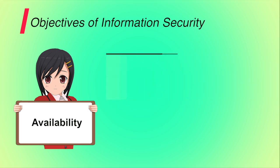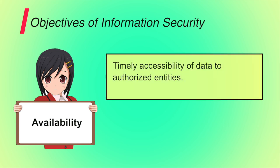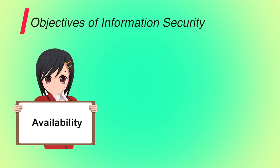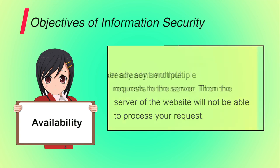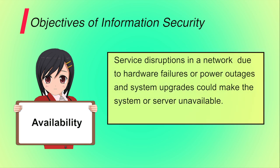Third is availability — it is ensuring timely and reliable access to and use of information. A loss of availability is the disruption of access to or use of information. For example, if you are trying to access any website and an attacker has already sent multiple requests to the server, the server will not be able to process your request. That means the data is not available to the authorized user. Service disruptions due to hardware failure, software failure, power outages or system upgrades could also make the system or server unavailable.